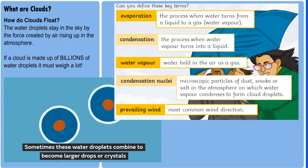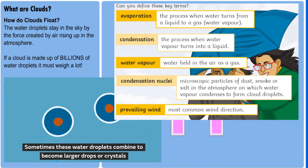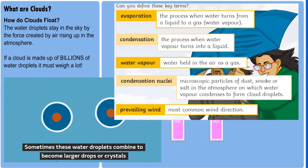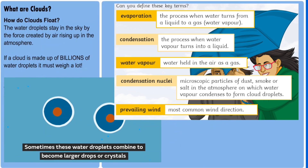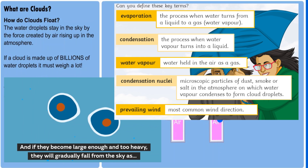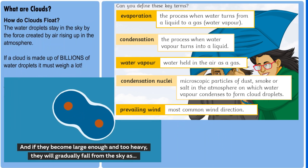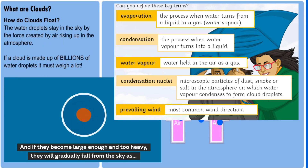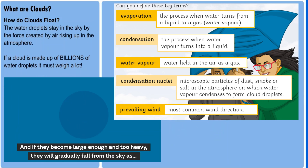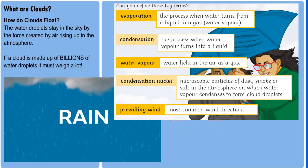When a high concentration of cloud droplets condense onto the surface particles, this can then become very, very heavy and heavy enough for it to fall as rain.